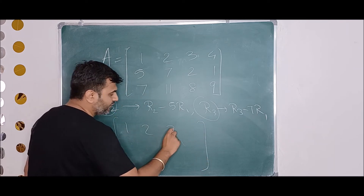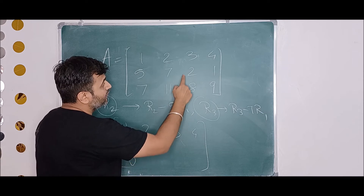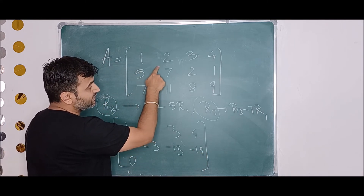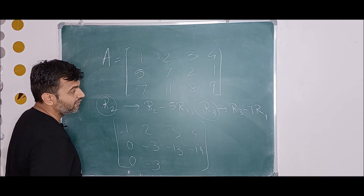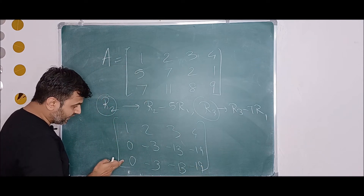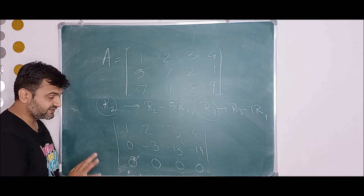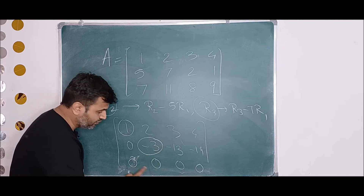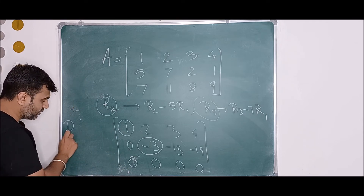After performing R2 minus 5R1 and R3 minus 7R1 we get the first row as 1, 2, 3, 4; the second row contains 0, 0, minus 3, minus 13, minus 19 (approximately); and entries in the third row. Then applying R3 minus R2 makes the third row all zeros: 0, 0, 0, 0, 0. The matrix is now in echelon form with two nonzero rows, so the rank of the matrix is 2.